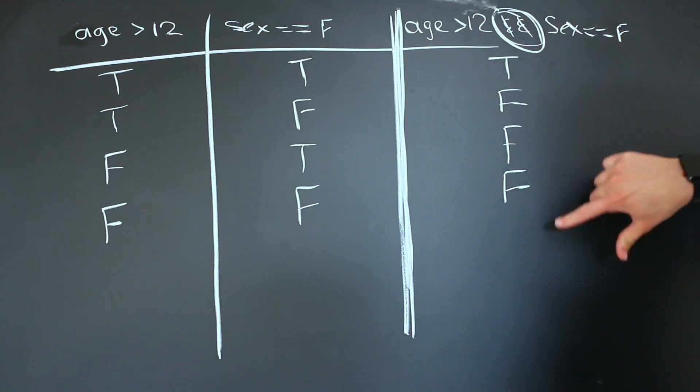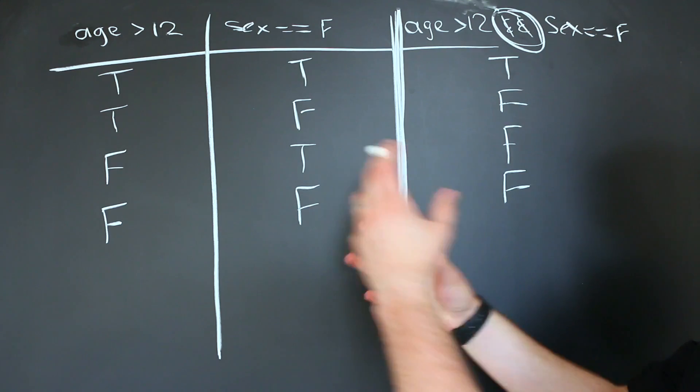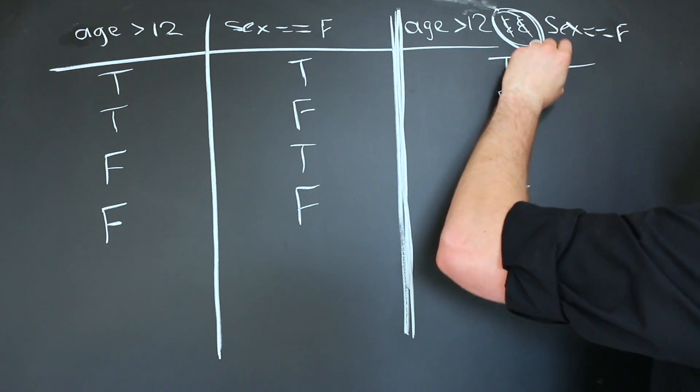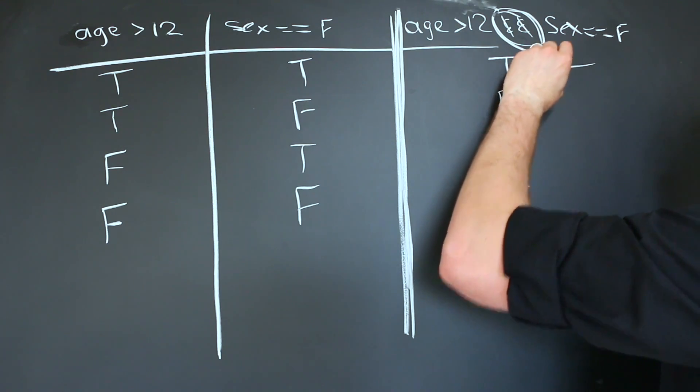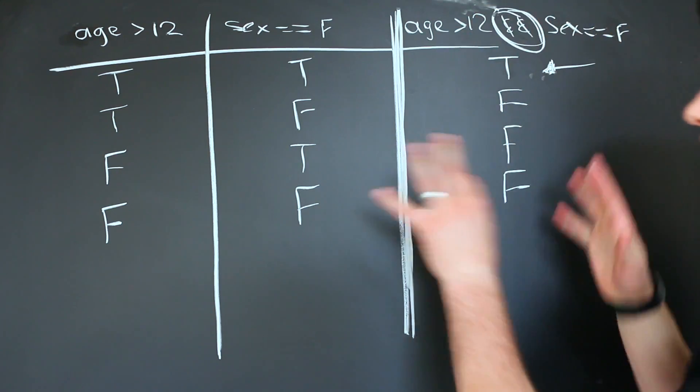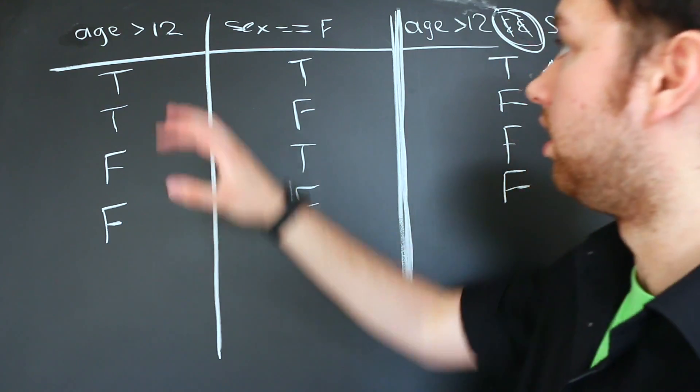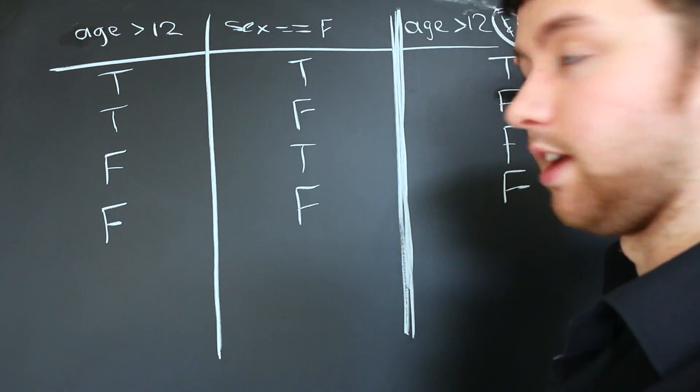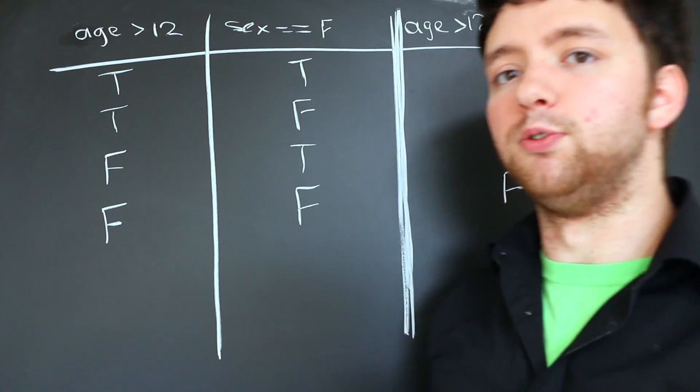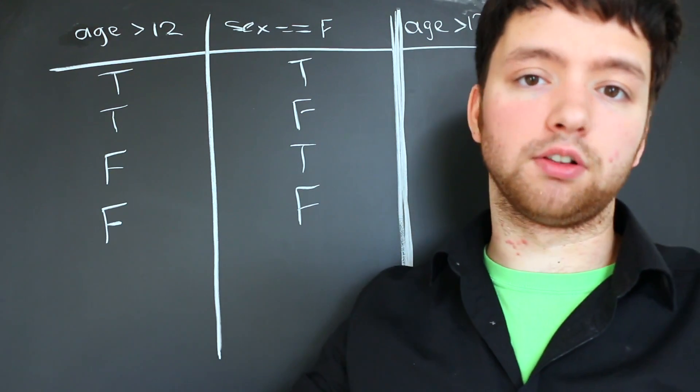So we basically just put the end result of combining these together. And this allows us to see how our stuff is going to be evaluated. So the only time that we're actually going to be able to get access to our application is in this case, when age is greater than 12 and sex is female. Obviously, it's really simple to see in this situation, but sometimes we have more complex expressions that are combined together using operators. And in that situation, these truth tables can be really helpful for debugging and building out our application to figure out what our branching is going to look like.